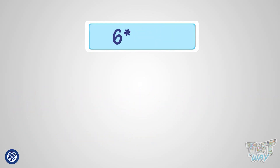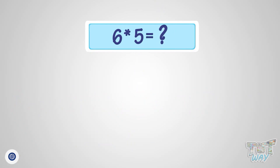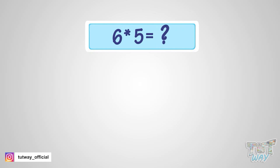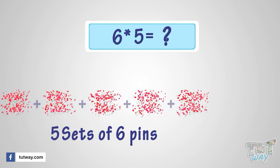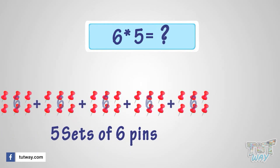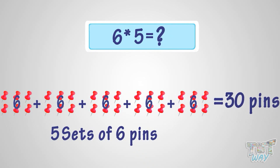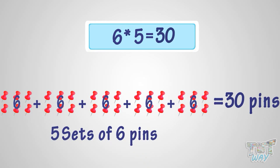What is six multiplied with five? It is the same as five sets of six pins. So it is thirty pins. That is, six multiplied by five is thirty.